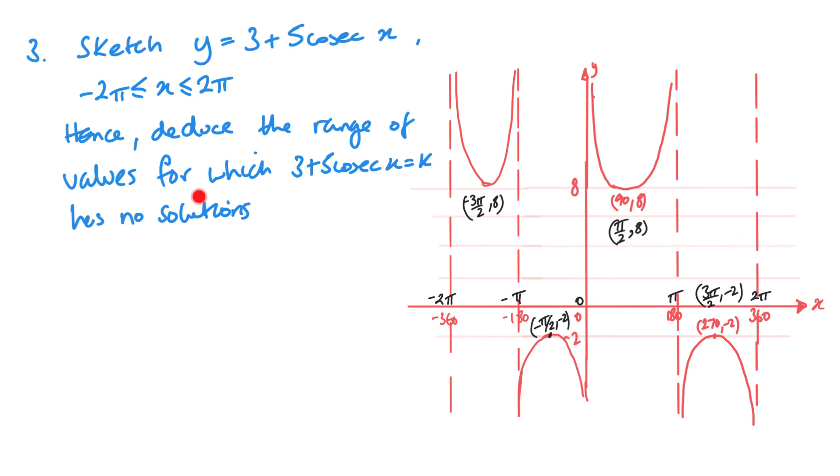Now, I need to deduce the range of values for which three plus five cosec x equals k has no solutions. So there's going to be no solutions for everything underneath this line and above this line. So when I'm looking at it, it's going to have no solutions when I'm looking at less than y equal in eight. So this line is y equals eight. So less than that. But I also want greater than negative two. So my y is going to be greater than negative two, but less than eight. Now, since we're looking at k, my final answer should be k, not y.